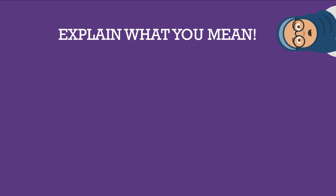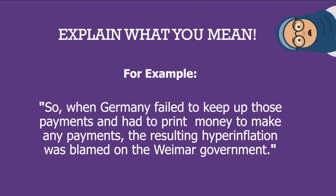After giving evidence, you must explain what you mean by your point and evidence - that is, what does your evidence prove? For example: 'When Germany failed to keep up those payments and had to print money, the resulting hyperinflation was blamed on the Weimar government.' Now you're linking your evidence to your point, explaining how the evidence proves that hyperinflation contributed to the Weimar government being overthrown. This is a very good sentence that will get you marks.